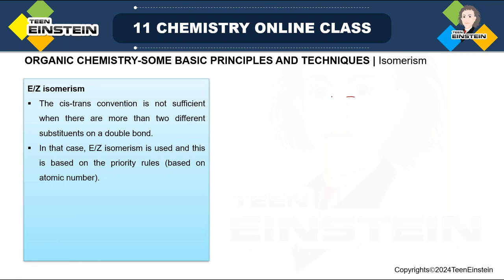Hello everyone. Today we will extend our study of isomerism — some topics are left. Last day we covered cis-trans isomerism and geometrical isomerism. The next topic is E-Z isomerism. Sometimes the cis-trans convention is not sufficient in some cases, and in those cases you have to take the help of E-Z isomerism.